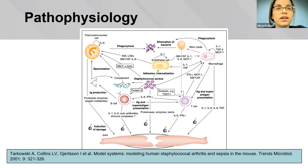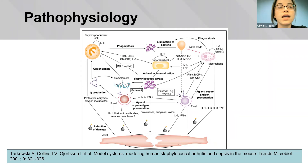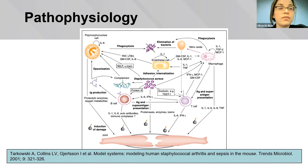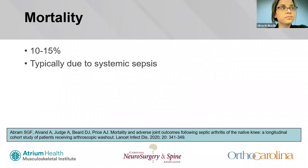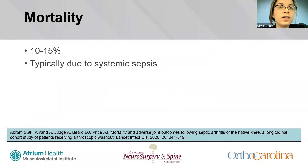As soon as bacteria reach the joint cavity, a rapid immune response is triggered. It has been shown that joint destruction in staph aureus septic arthritis is caused not only by the invading microbes, but also by cells and molecules of the immune system involving both innate and adaptive immunity. Unfortunately, the mortality rate associated with native joint septic arthritis ranges from 10 to 15% and has been constant over the past decade, with death typically due to systemic sepsis.